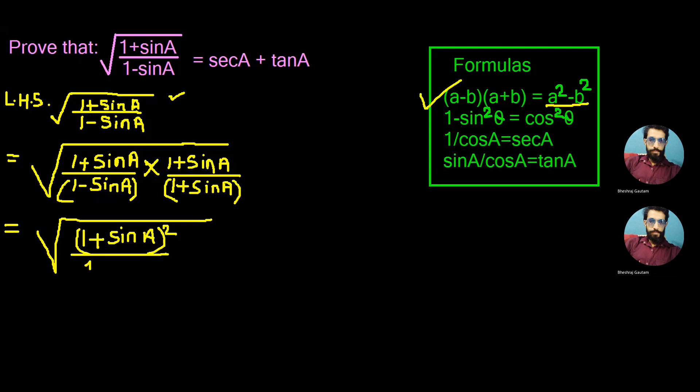So let's do the same here. In place of A square we write one square as one, so let's write only one here minus, in place of B square we write sin square A.